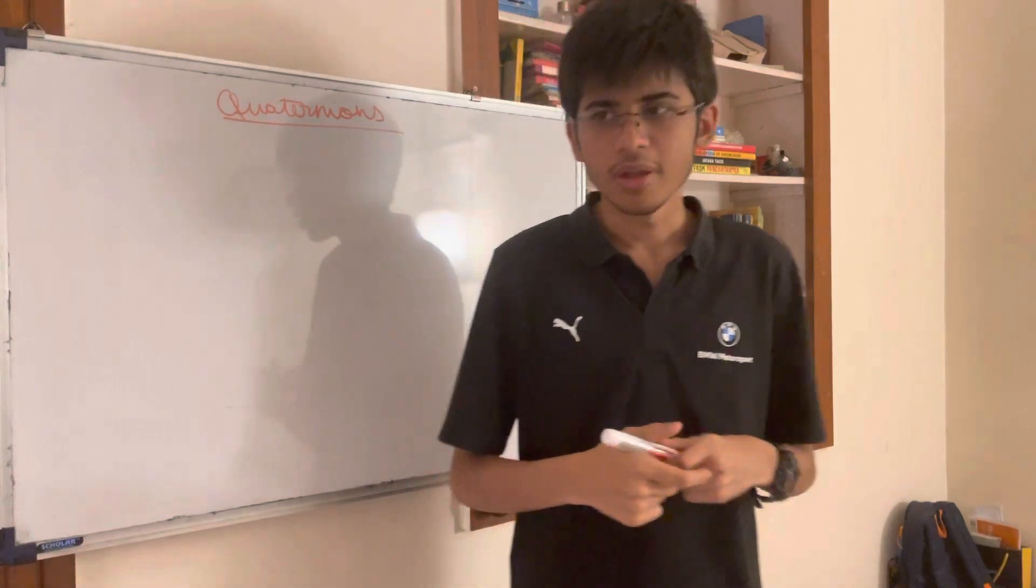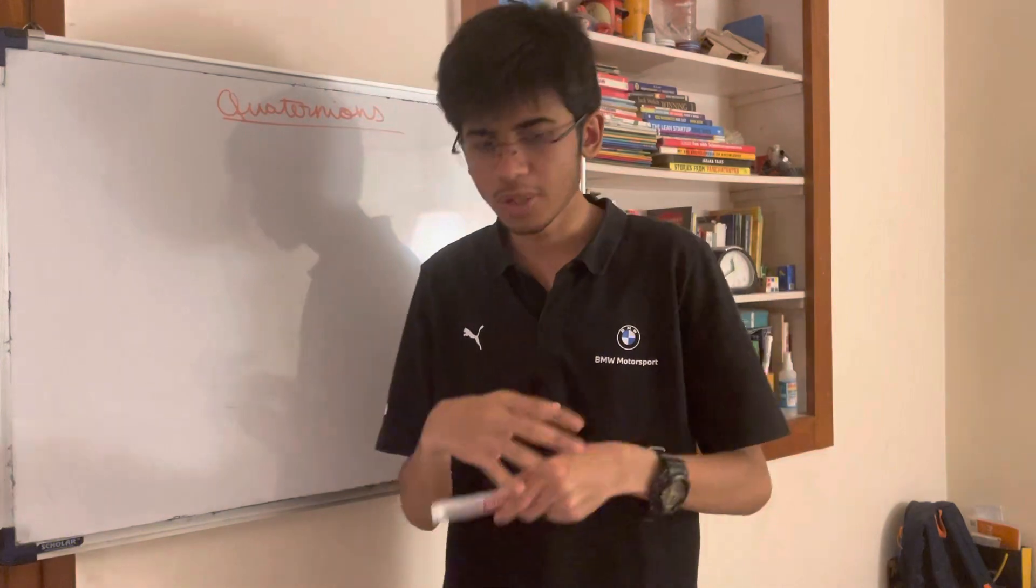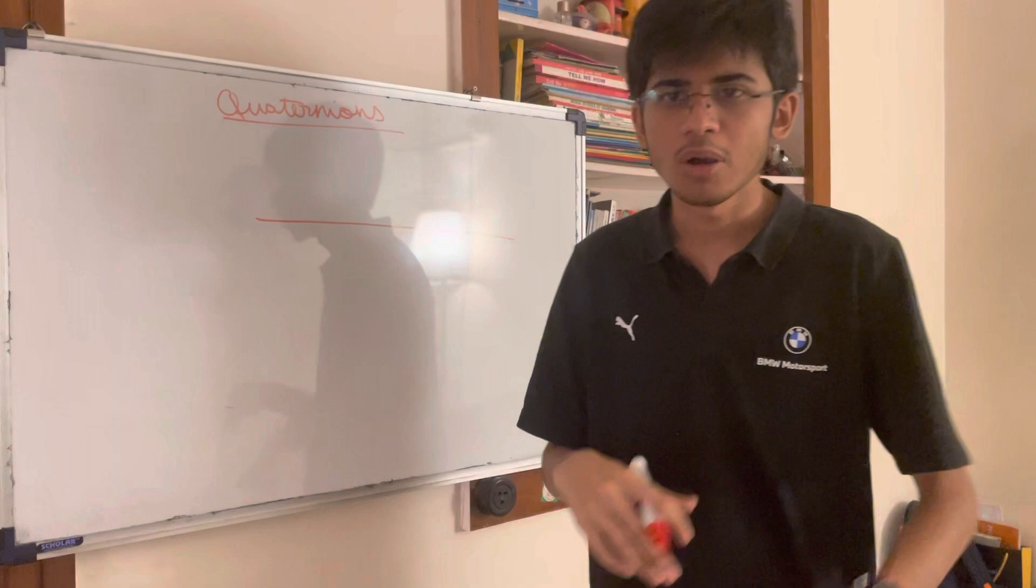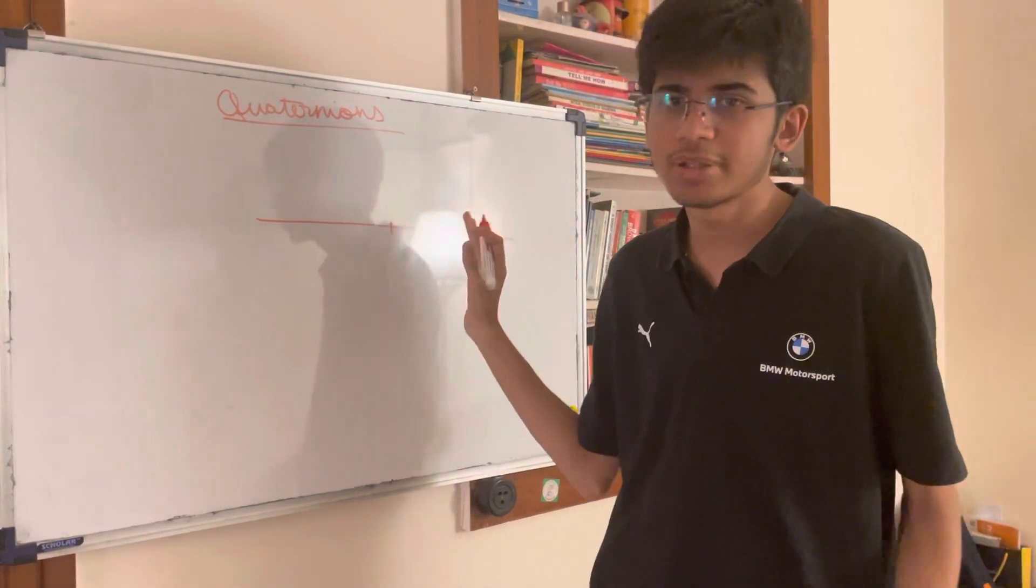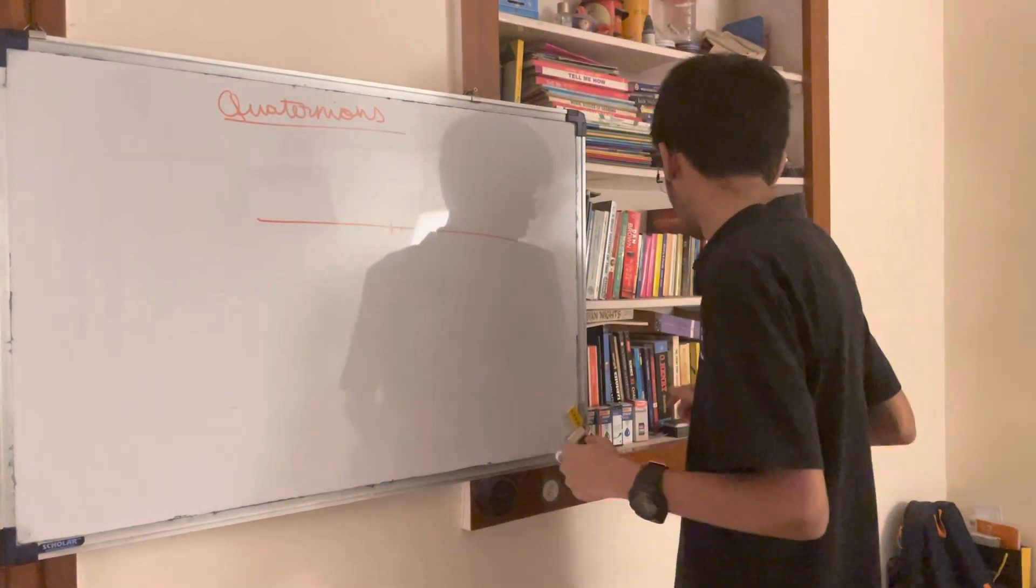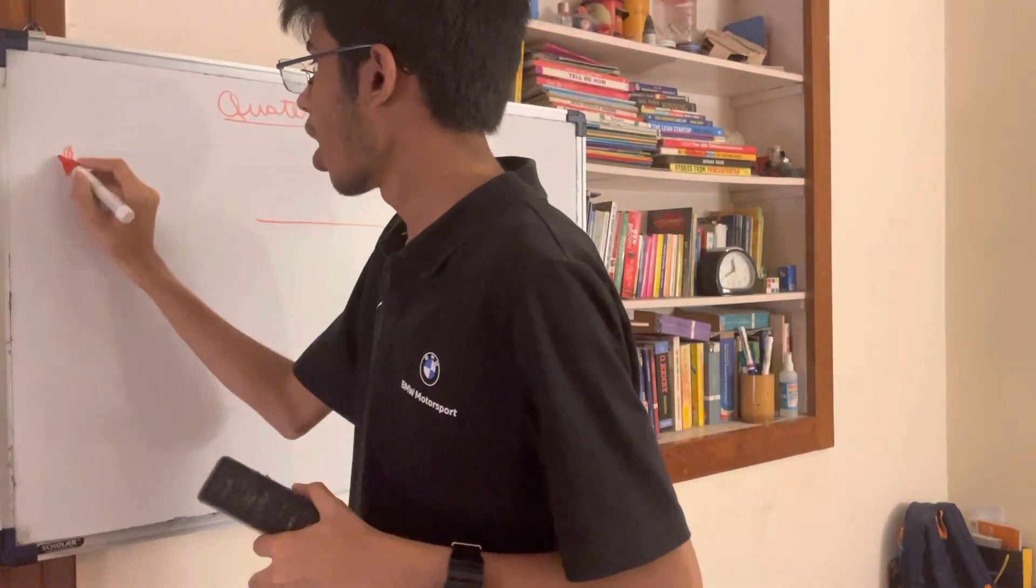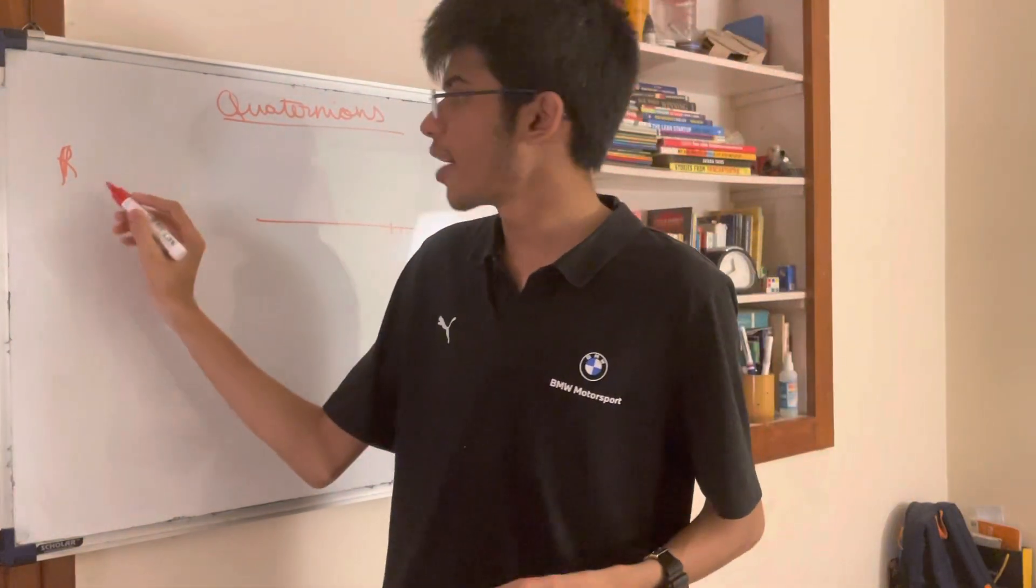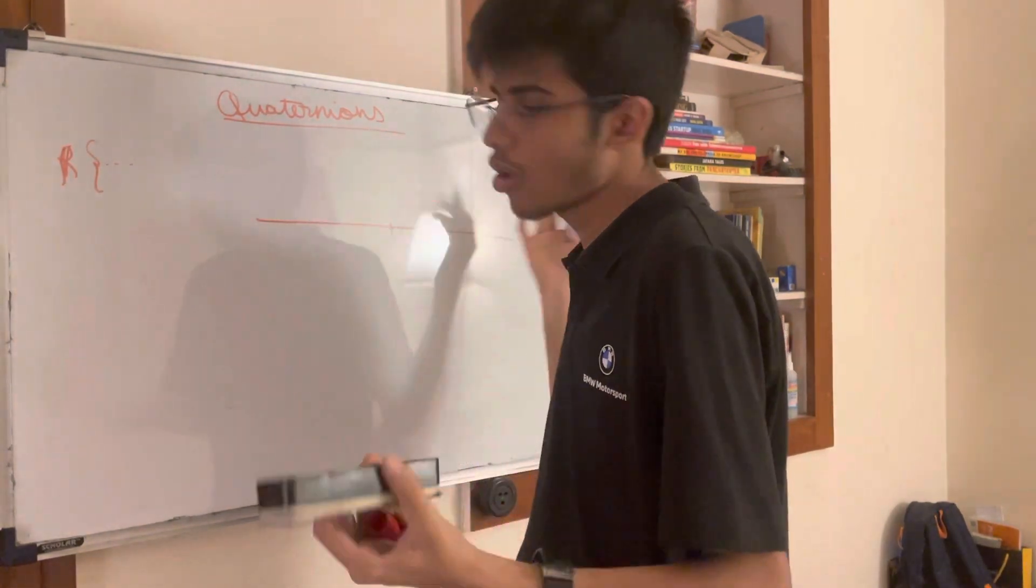we know what real numbers are. Real numbers are basically 1, 2, 3, minus 1, minus 2, minus 3, 1.3, 1.4, and anything which can be represented by a line. One-dimensional numbers. Any point on the line is a representation of a real number. Most people are familiar with real numbers. Real numbers can be represented using R, the real field, and you can have numbers which consume all possible numbers which are on a line.